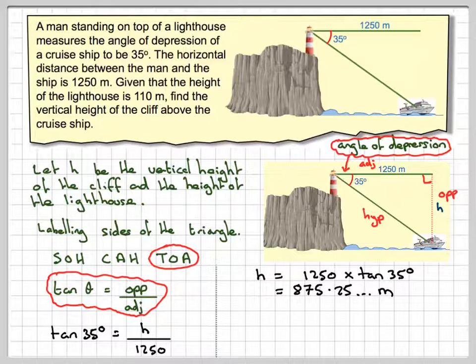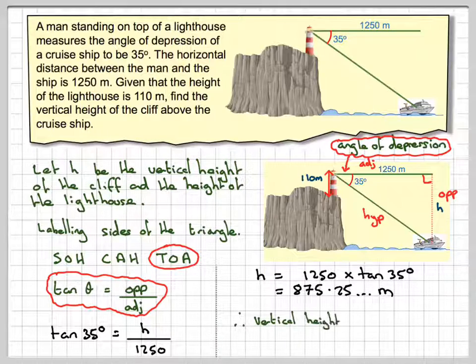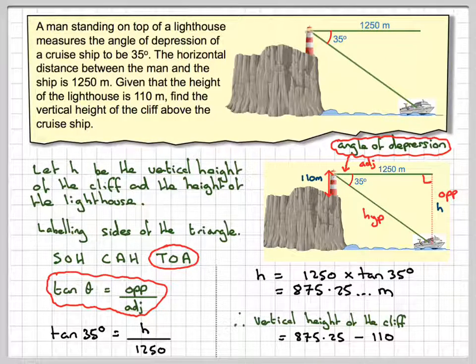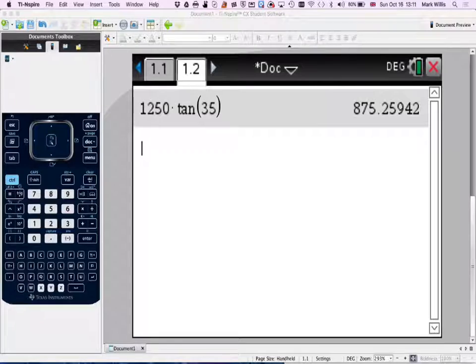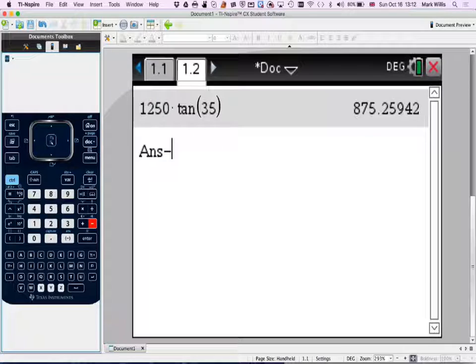So 875.25 metres, we have to calculate this height here, this one, so we'll have to take away from that 110. Therefore, the vertical height of the cliff is going to be 875.25, take away 110. If we go into our calculator and just put take away 110.